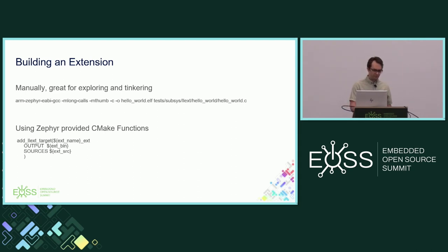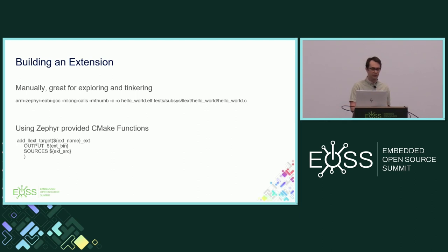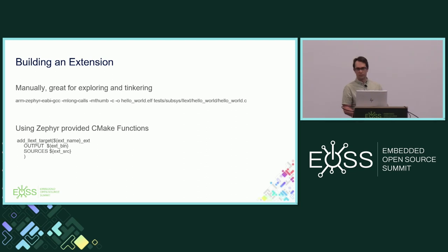How do we actually build one of these? When I started, it was very nice to just call the compiler directly, do object dumps, and see all the ELF data. That's still a great way to experiment and tinker and understand relocations without involving all of CMake. But since then, Luca has done a great job adding CMake functions that make this very simple — it looks pretty much just like adding a library target in Zephyr: give it a name, sources, and output. Easy.